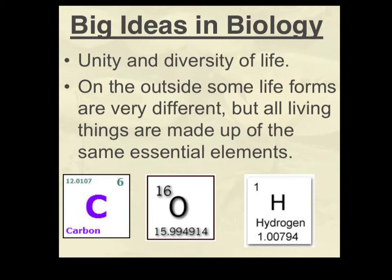The next concept is called the unity and diversity of life. It may seem like these two things are opposites — unity tying things together and diversity pointing out how they're different — but this is one of the big ideas in biology we'll talk about all year. When we get to classification at the end of the year and look at all the different kingdoms and phylums, it's truly incredible how varied and different all the species are on the planet, but at some level there is definitely unity that ties them all together.